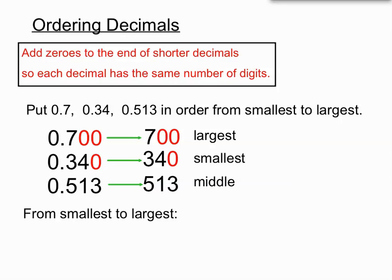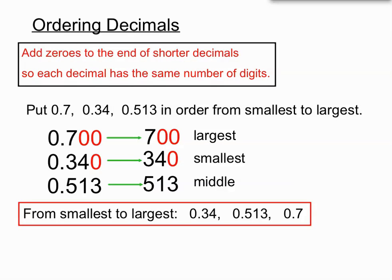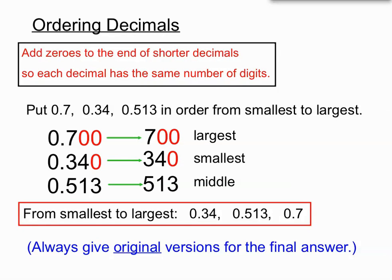So from smallest to largest we put 0.34, we decided that was the smallest. Now notice we are putting the original version of 0.34 without the zero that we put in, because that is important as well. So the next one, the next largest after the smallest, is 0.513, that is the middle one. And 0.7, and once again we have put in the original one. So we have put them in order, and it is really important to always give the original versions for your final answer in these sorts of questions.